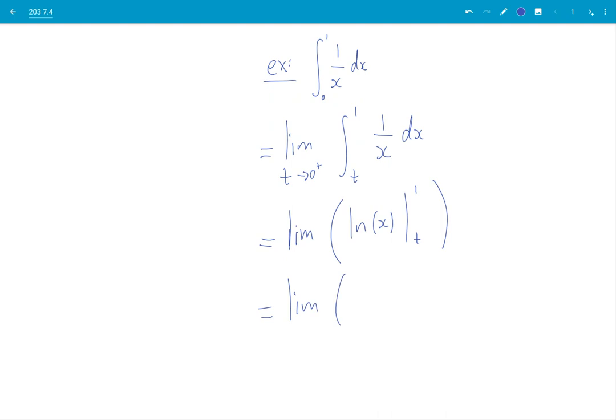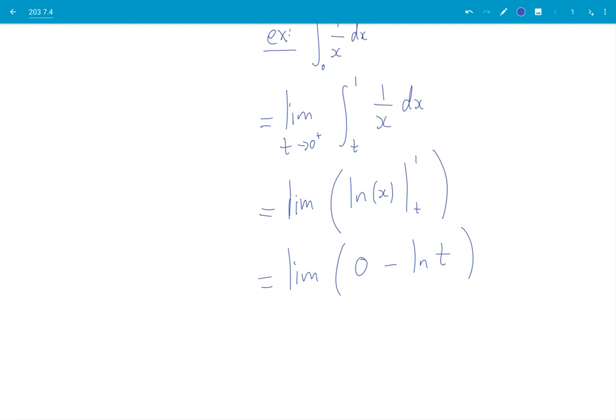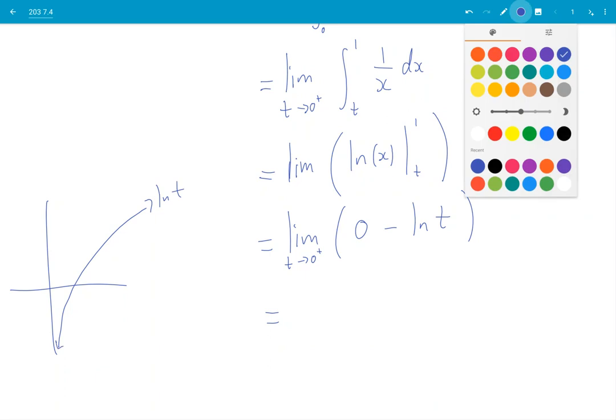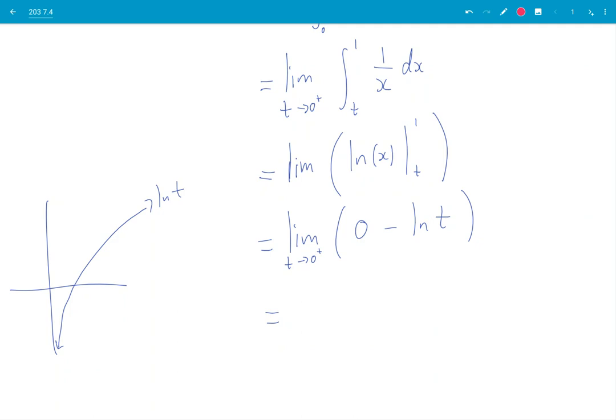So we get limit ln of 1 is 0 minus ln t. Now, what's happening here? t is going to 0 plus. Now, you should have memorized the graph of ln. ln looks something like this. So as the t gets smaller, what happens is you're going down this way.